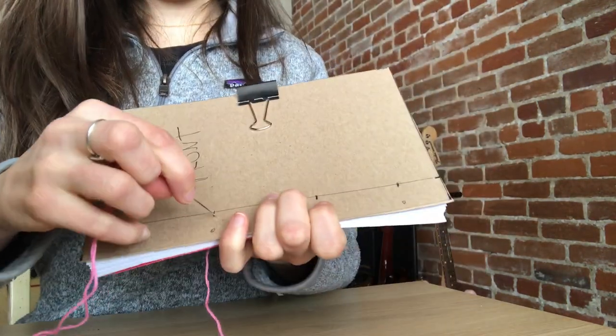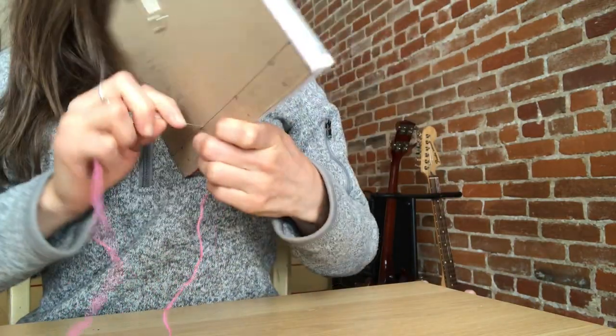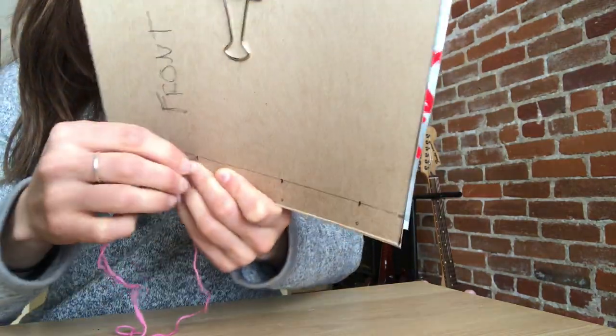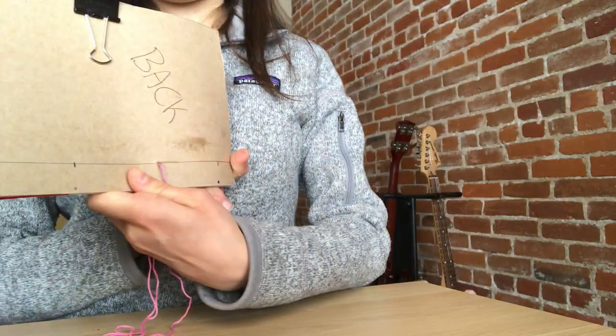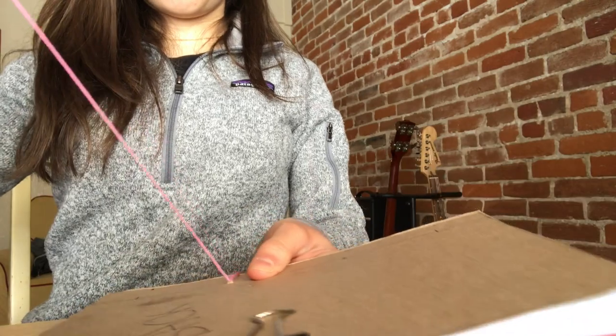And then get your thread, and you're going to go from that second hole from back to front. So it's going to go around what will be the spine of your book. Make sure that you pull tight. If you don't pull tight, your binding will be loose.